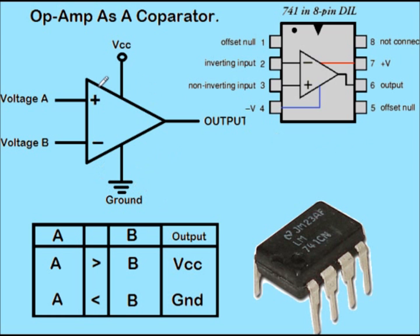According to our table, if A is greater than B — let us say A is 9 and B is 5 — the output will be VCC. If VCC is 9, 10, or 12 volts, the output will be that voltage. And if B is greater than A, the output will be ground. This is basically how a comparator works.